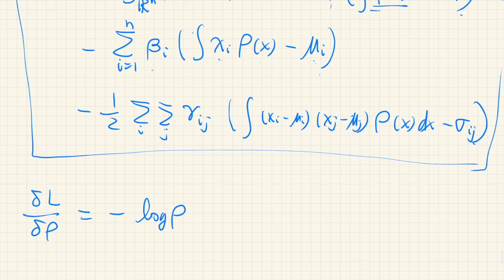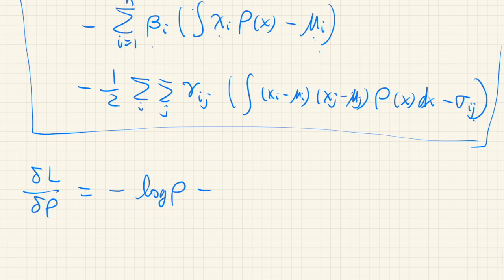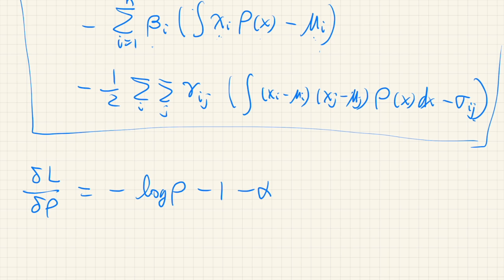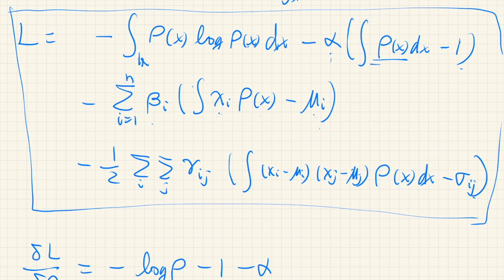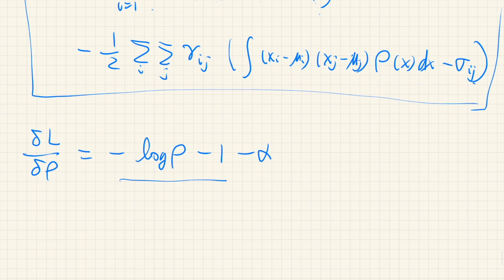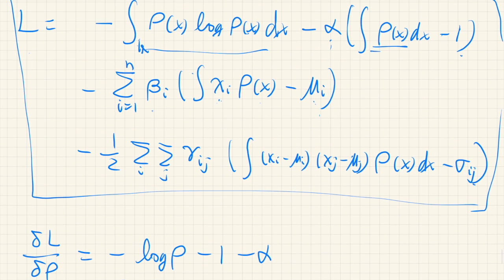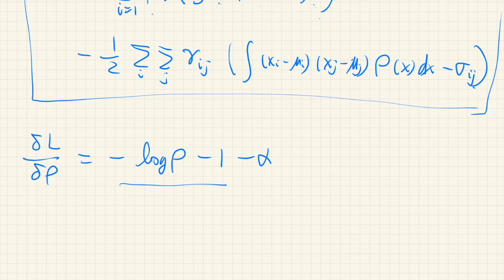And for this, we get negative log ρ. And from here, we have negative 1, negative α. So from the entropy term we get this part, and from the normalization term we get this α.